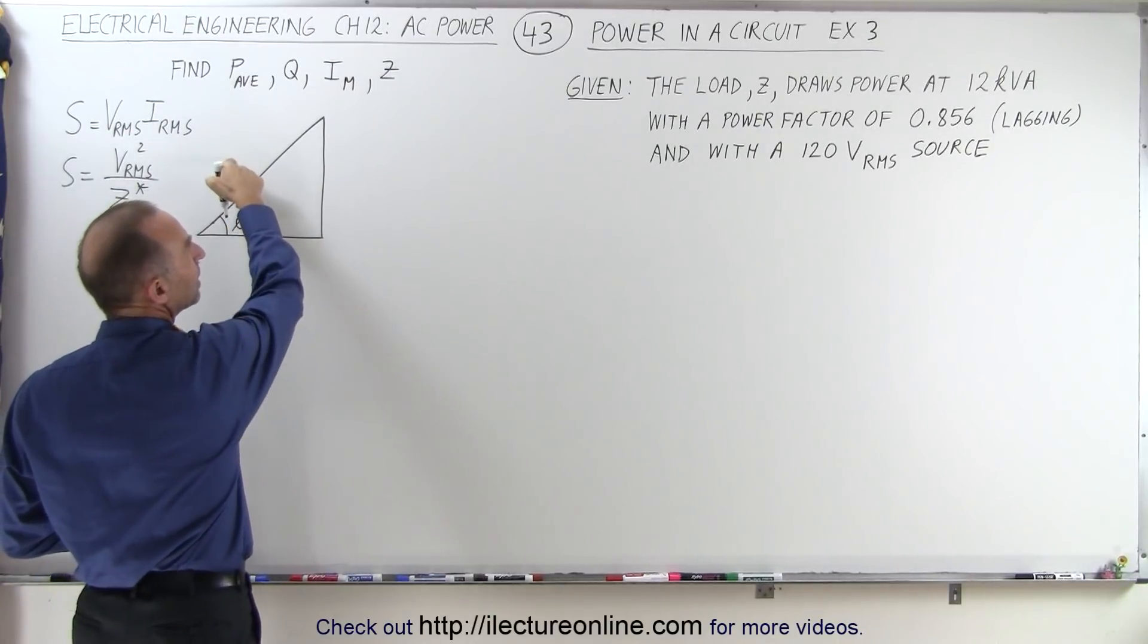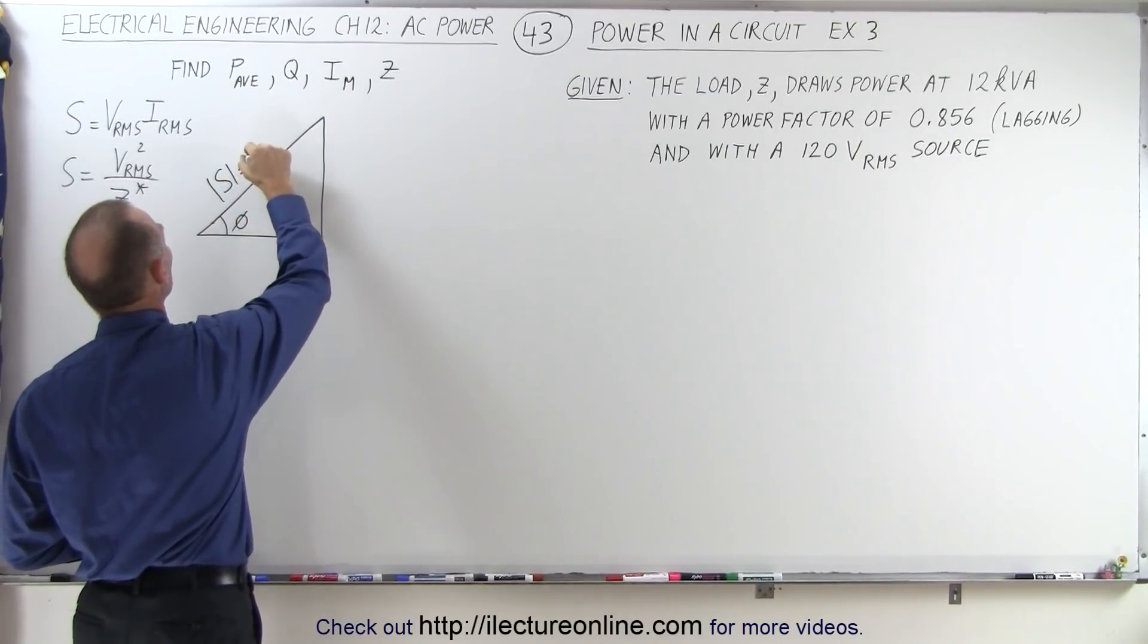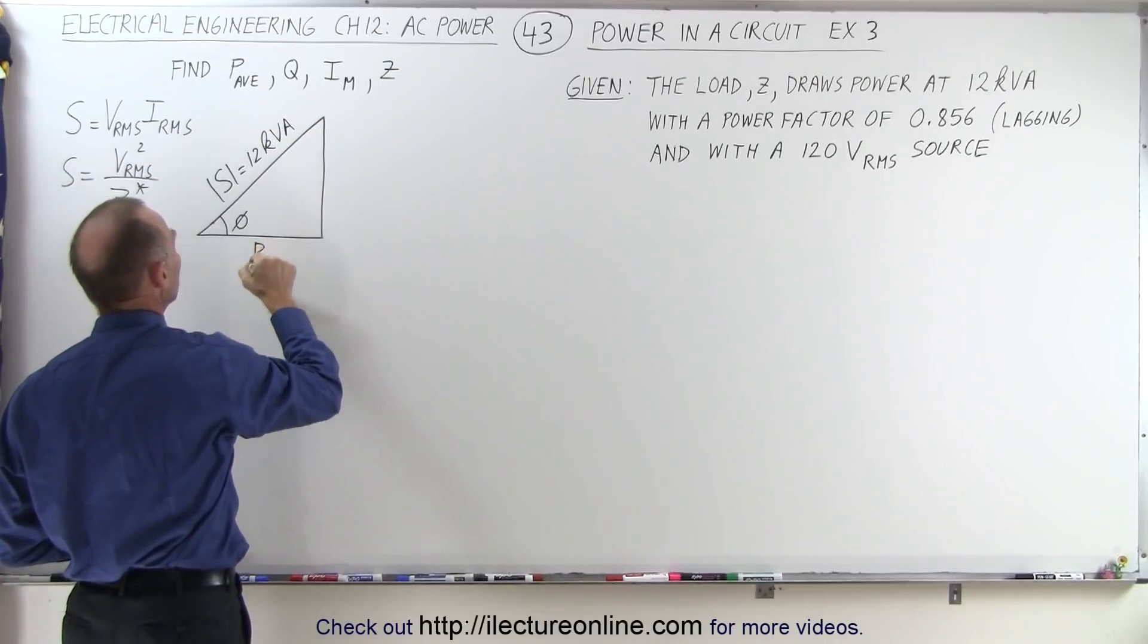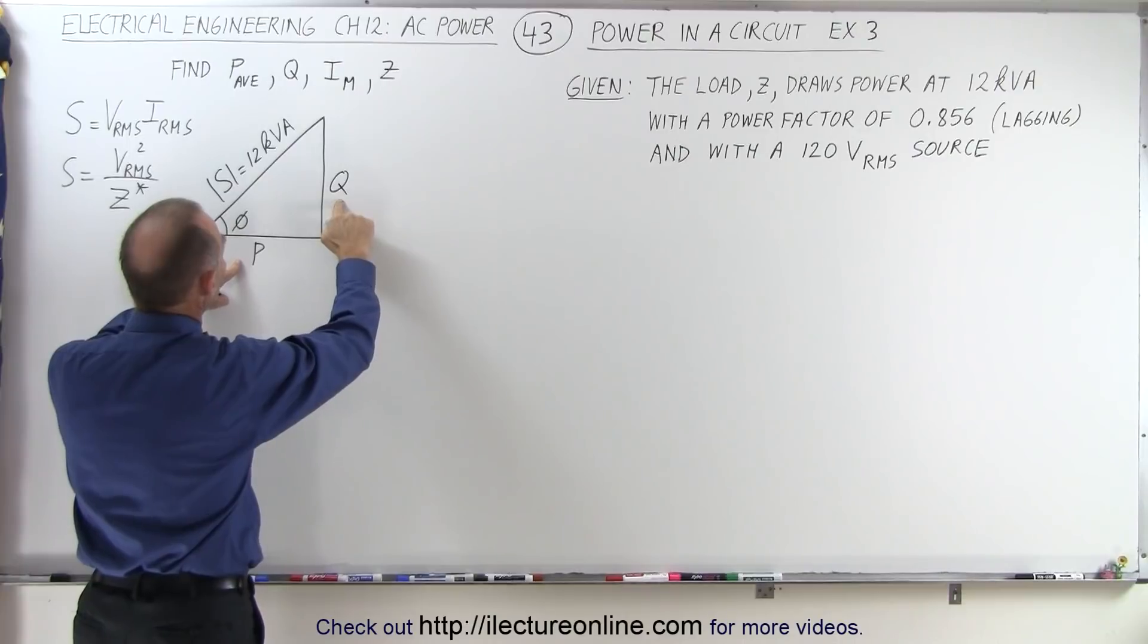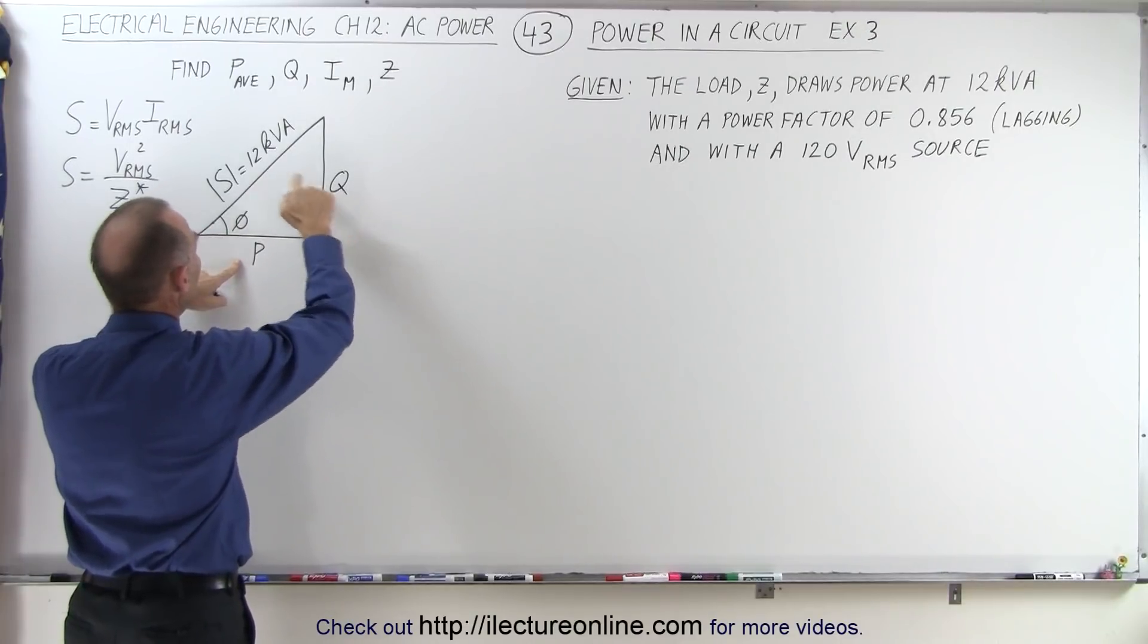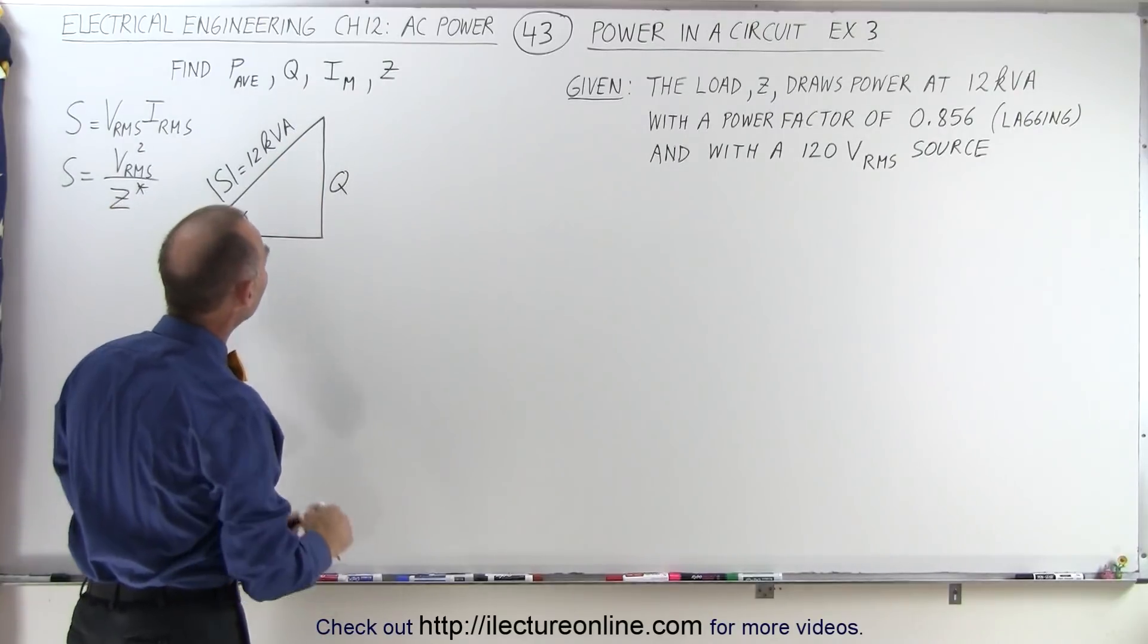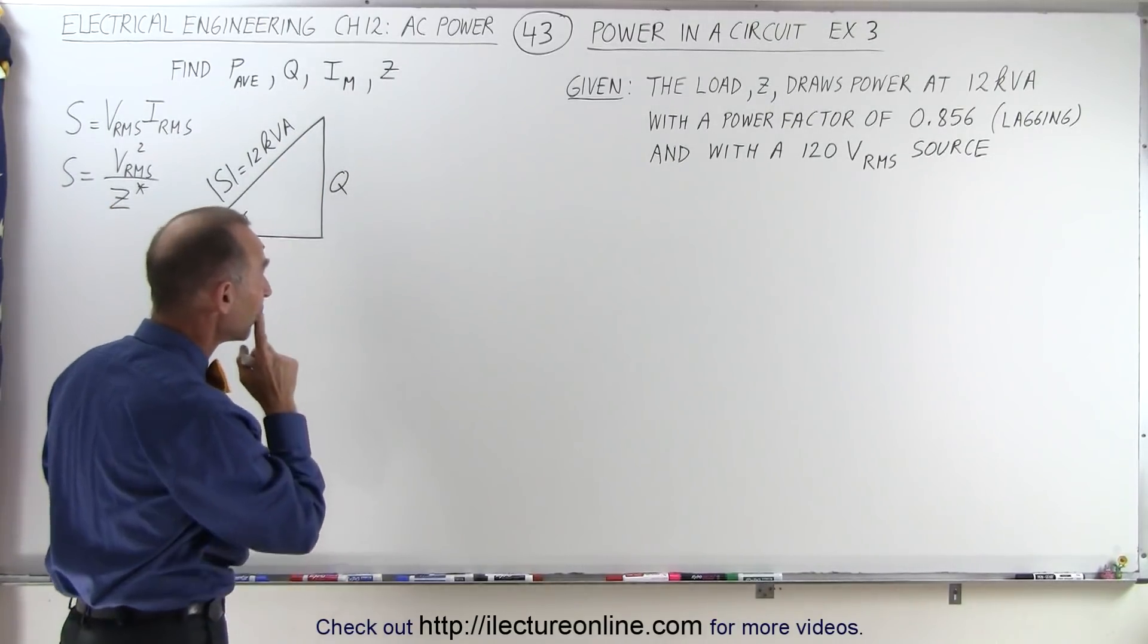we have a phase angle here equal to phi. This would here be the value of S, or the magnitude of S, and it is equal to 12 kVA. Then this would be the real power, and this will be the reactive power. We're given the hypotenuse, the magnitude of the complex power, and from there on, we probably can find most everything.